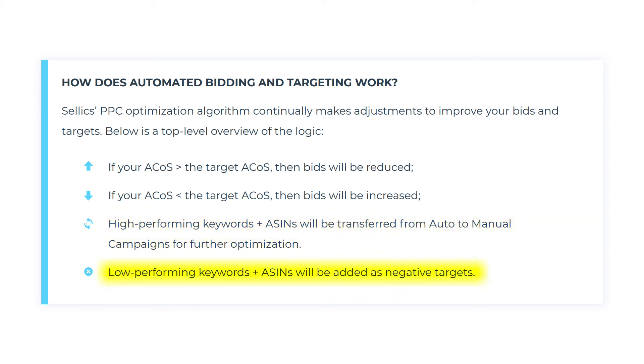And finally, our low-performing keywords and ASINs are going to be added as negative targets so we aren't wasting any ad spend on those low-performing targets. So there we have it — a bit of behind-the-scenes of Selex's smart campaigns showing you what they are and just why they are so powerful. In the next set of videos, I'm going to show you which products you should be choosing for your Selex smart campaigns initially, and also how to set them up and assess them over time, so be sure to check those tutorials out too.